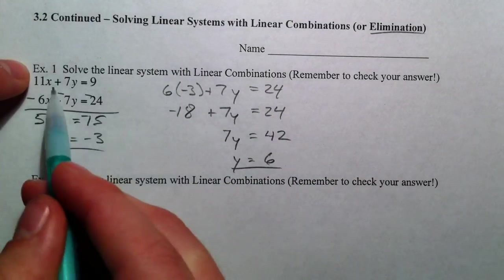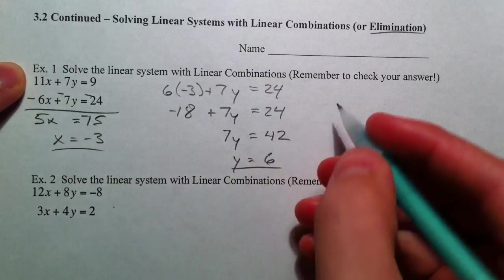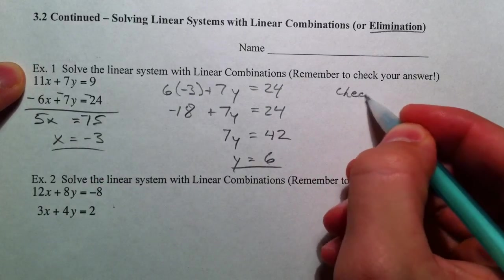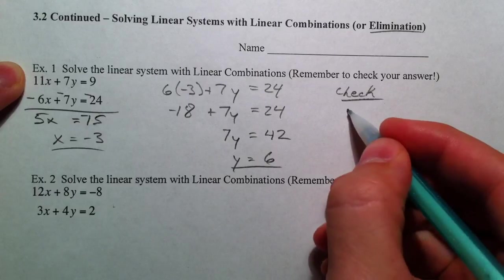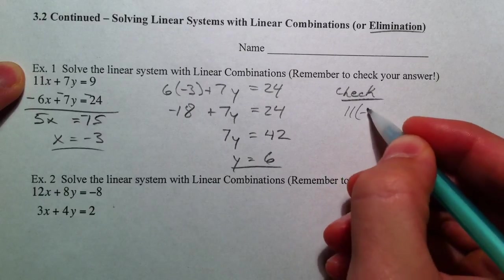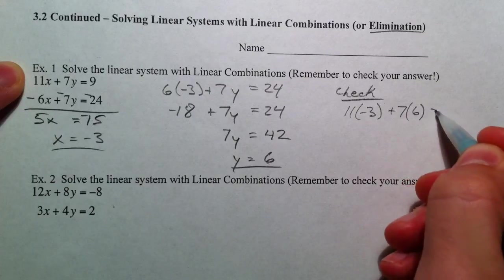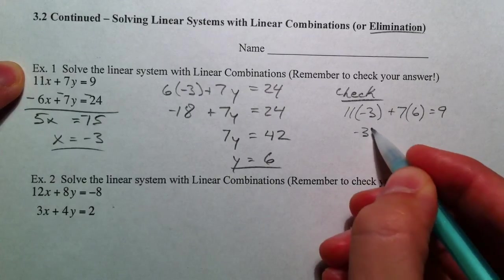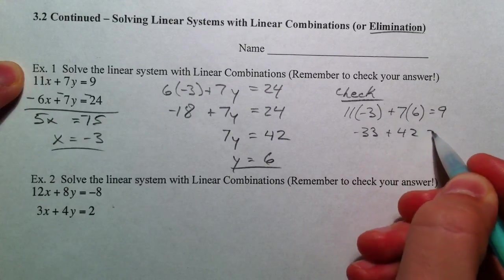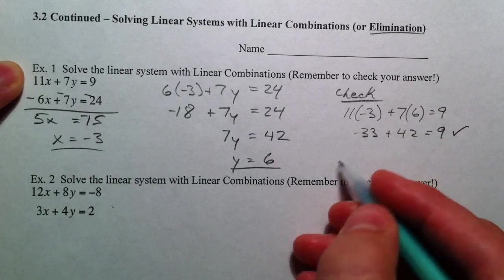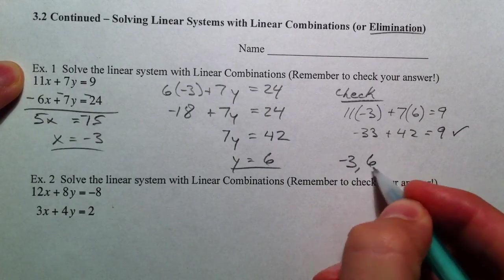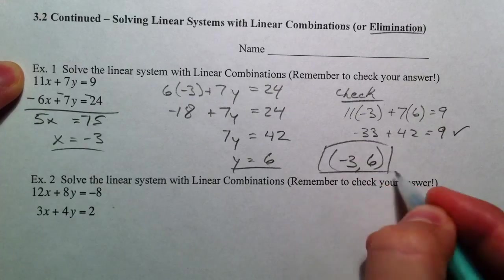Check it. Plug it back into your other equation here, because we're all possibly making mistakes. We're capable of it. So, negative 33 plus 42 equals 9. And that makes sense, so it checks out. So, negative 3, 6 is our answer.